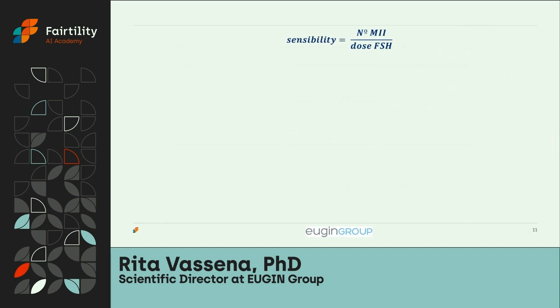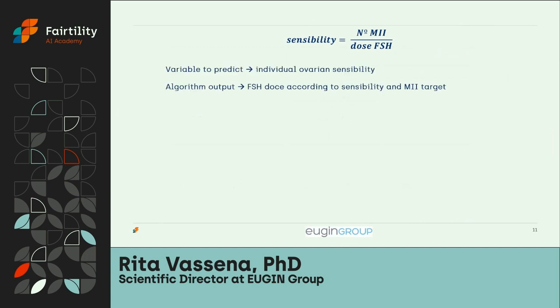To predict and plot the best initial FSH dose, we developed a new variable called ovarian sensibility, defined as the number of mature oocytes collected from the ovary divided by the dose of FSH used. This sensibility, which is individually specific for each patient, is the variable we asked the algorithm to predict. The output is the FSH dose, calculated according to the sensibility and constrained within a target range of M2 we wish to achieve, while always taking the patient's ovarian reserve into consideration.